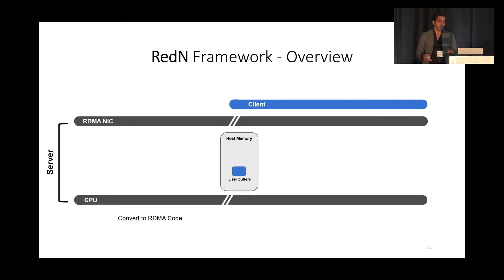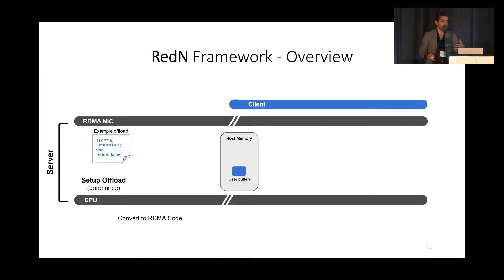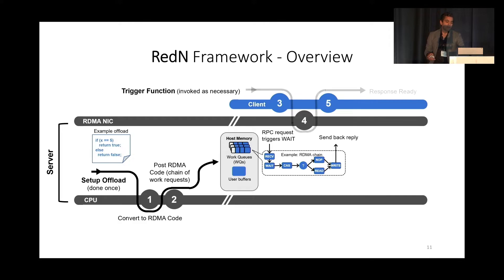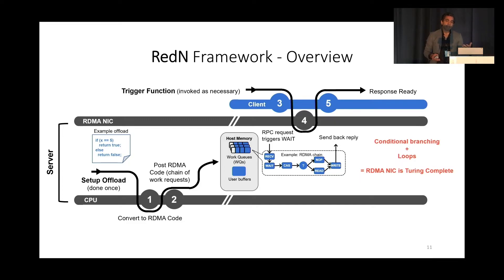To summarize the Redden framework: first, we post the code on the server — high-level if and else statements translated by a compiler into RDMA code posted on the work queues, all happening server-side. This only needs to be done once because the code can be invoked as many times as necessary. The client then triggers this posted code using a simple send operation, which triggers the chain of pre-posted operations on the server. This can be done as many times as needed by the client — it's basically a simple function invocation. Because of conditional branching and loops, we show that RDMA NICs are, in fact, Turing complete.